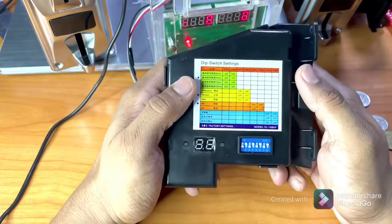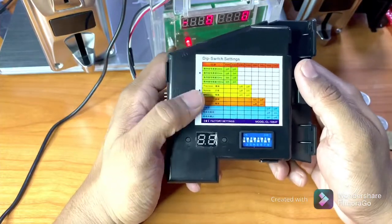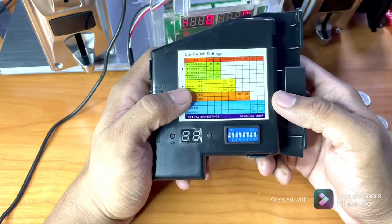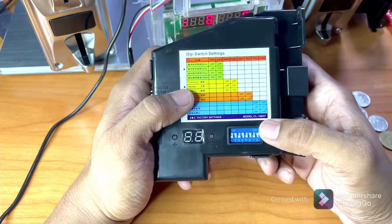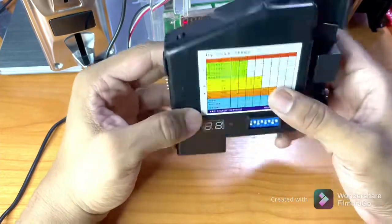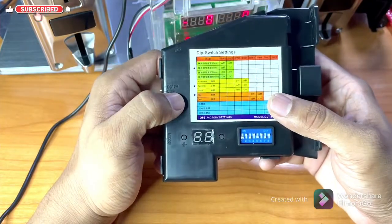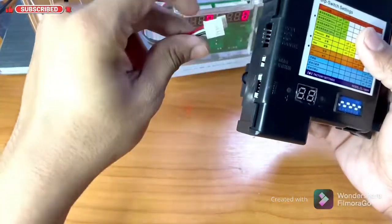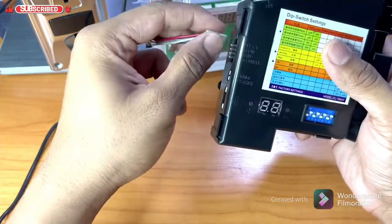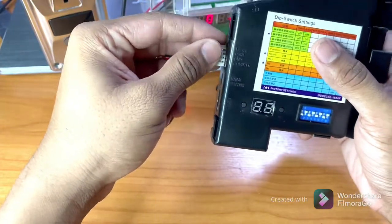Hello guys, welcome back to our channel. Today I'm going to explain how to upgrade coin acceptor CL168AF. This coin acceptor can remember four different types of coins. So first of all, connect the wire from your PCB board.